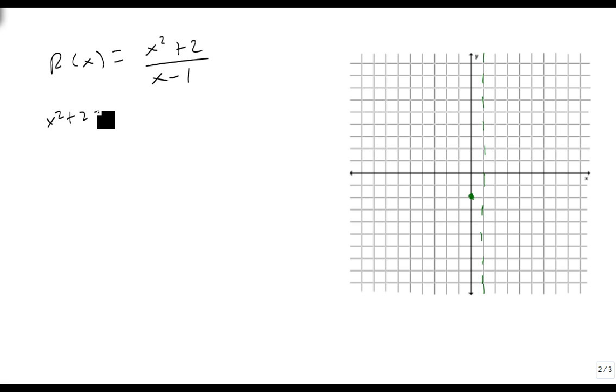The x-intercept: x squared plus 2 equals 0, so x squared equals minus 2. This becomes imaginary and we can't graph it, so there's no real zeros.